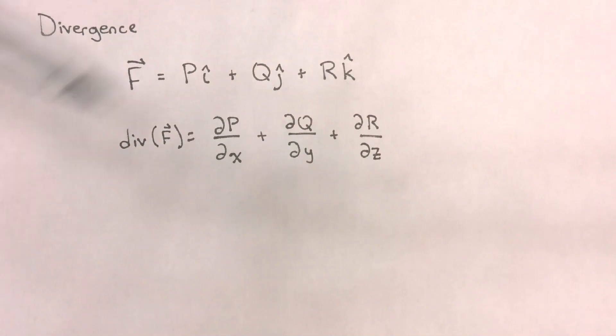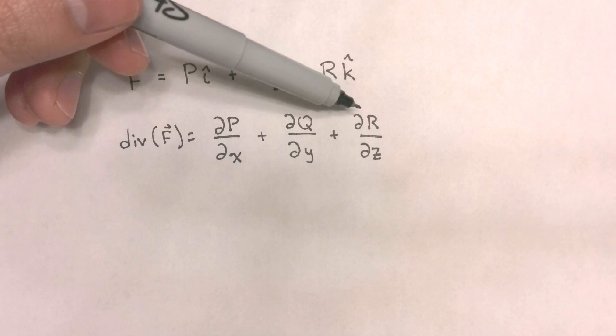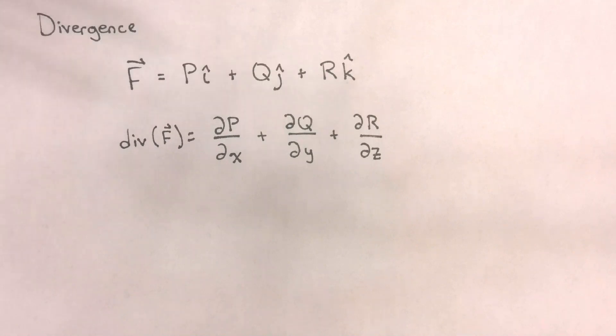Now notice a couple of things. p is the x component of f, so this is the same as saying partial of f sub x with regards to x. q is the y component of f, so this would be the same as saying partial of f sub y with respect to y. And r is the z component of f, so this would be partial of f sub z with regards to z.